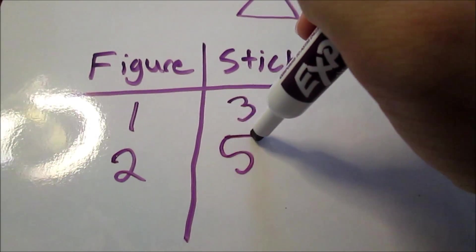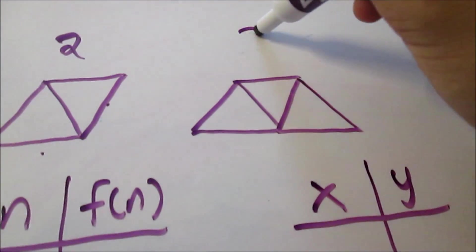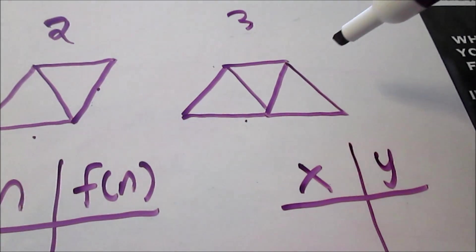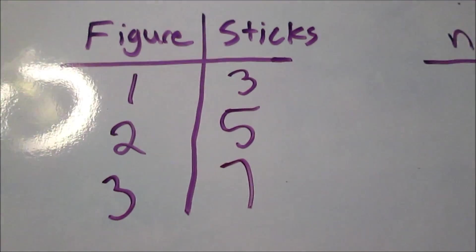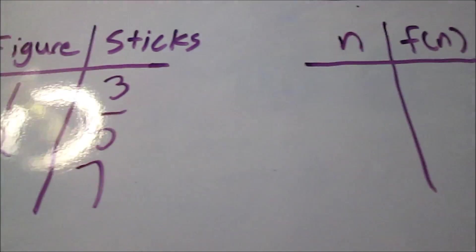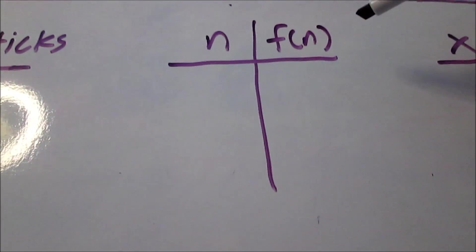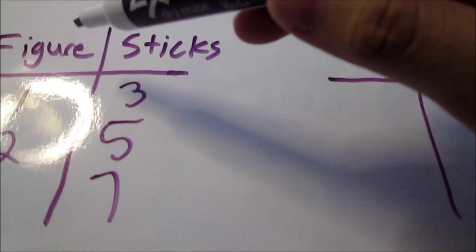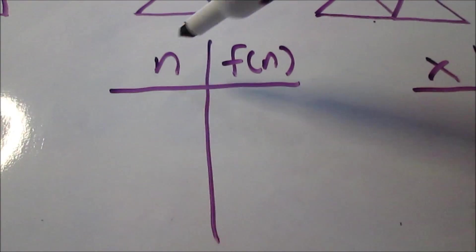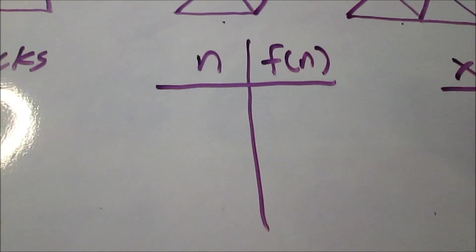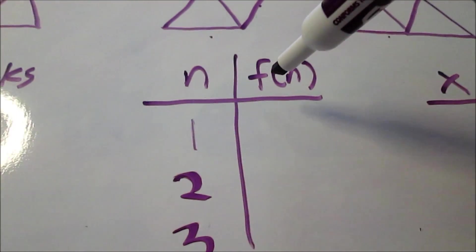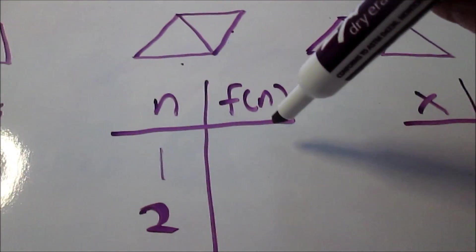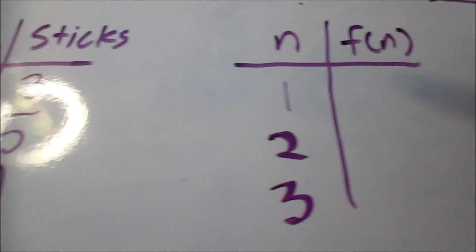And then repeat with figure 3, the next one. 1, 2, 3, 4, 5, 6, 7 sticks. Figure 3 has 7 sticks. I also wrote the same table again on the right but using different terms. Instead of saying figure and sticks, I used n and f of n. n still means the figure number, which were 1, 2, and 3. And f of n just means the number of sticks. Again, same as last time, 3, 5, 7.